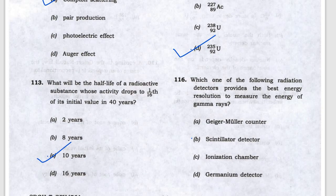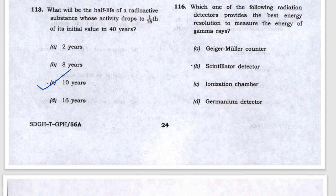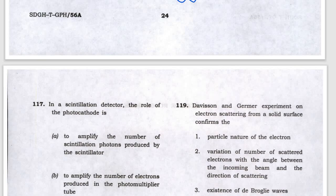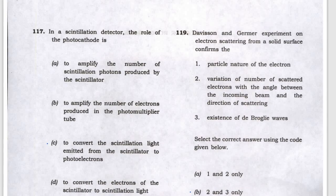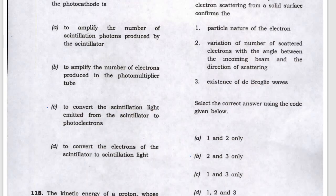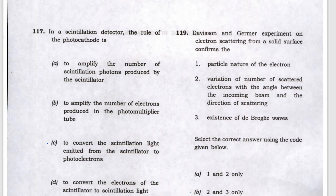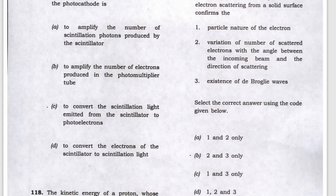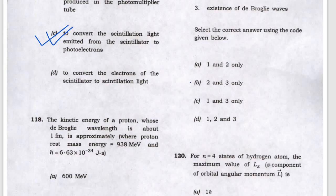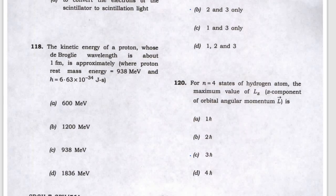Which detector is best suitable for resolution in energy of gamma ray is the germanium detector, which is actually a semiconductor detector. The scintillation detector's role in photocathode is to convert scintillation light emitted to photoelectrons, so C is the answer.